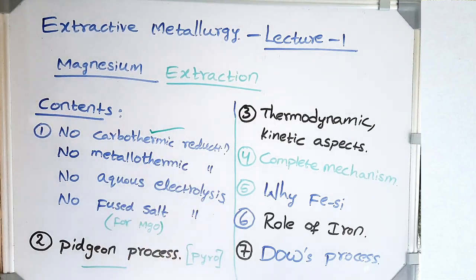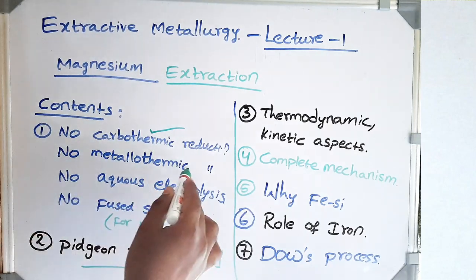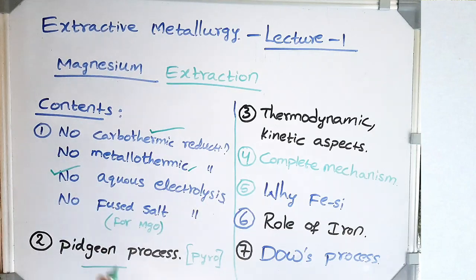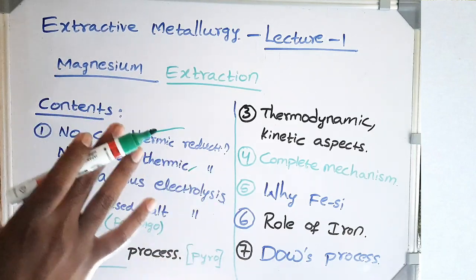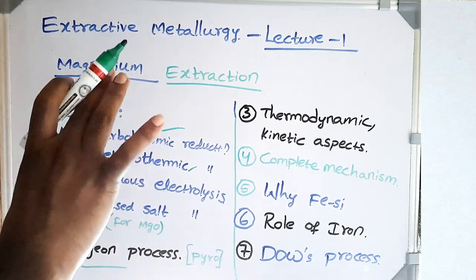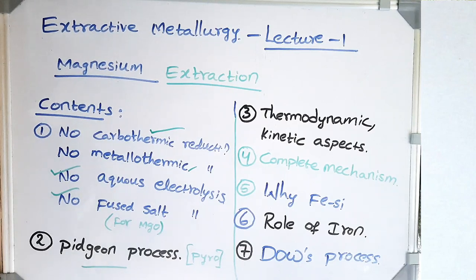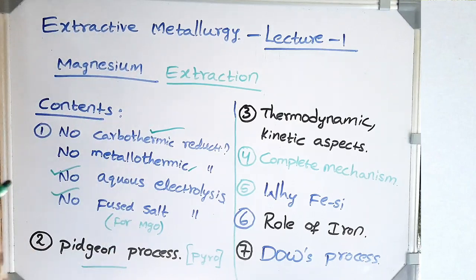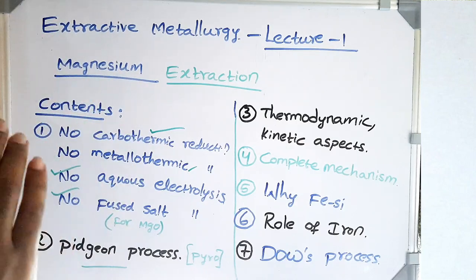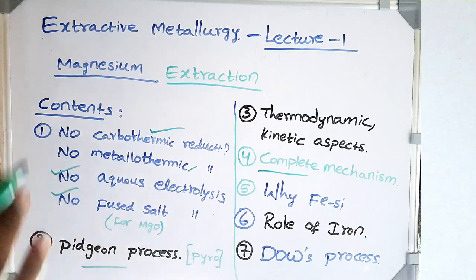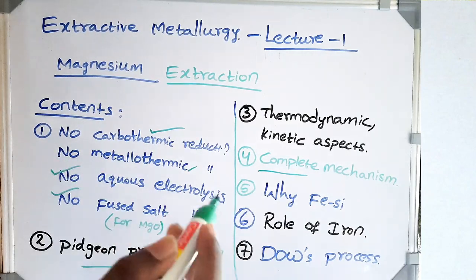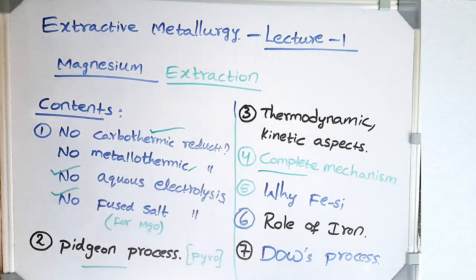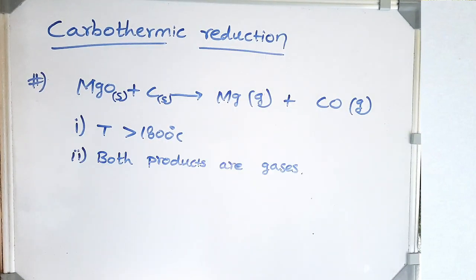We're going to discuss why we do not do carbon reduction — carbon is very cheap and we would love to use it, but there are some problems. We'll look at why there is no metallothermic reduction, why we can't do aqueous electrolysis or fused salt electrolysis. Then we go to the Pigeon process, examining all thermodynamic and kinetic aspects. Though thermodynamically unfavorable, we use Le Chatelier's principle to overcome difficulties and produce magnesium. Finally, we see the Magnotherm process and the Dow process, where we extract magnesium from seawater as MgCl₂.